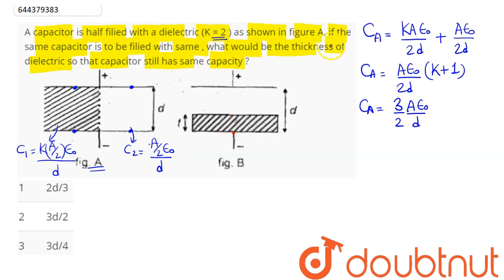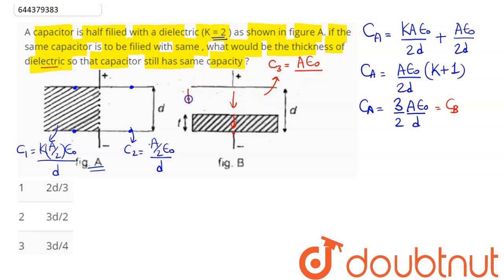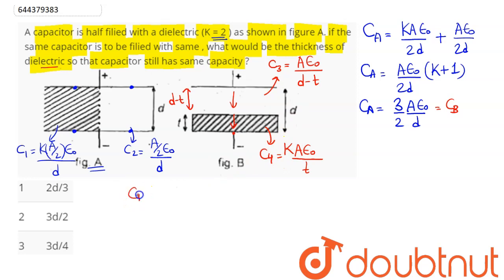Coming to the second case, the thickness of the dielectric is being adjusted so that the equivalent capacitance Cb equals 3A·ε₀/2d. These two capacitors are in series. Capacitor C3 has area A and thickness (d − t), so C3 = A·ε₀/(d − t). Capacitor C4 has dielectric, so C4 = k·A·ε₀/t.